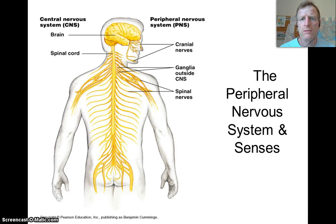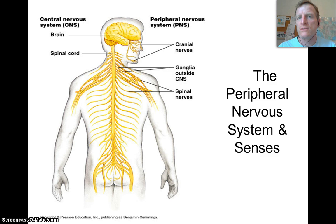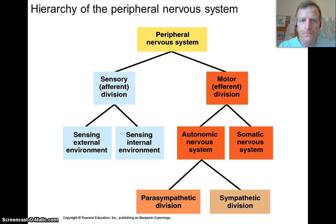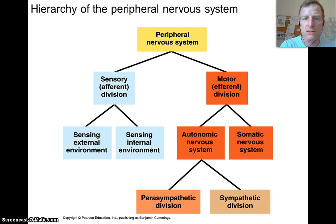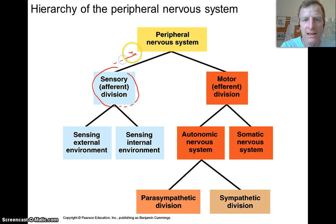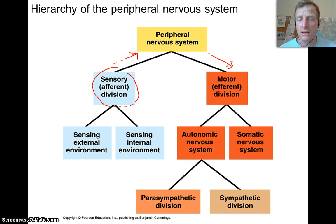The peripheral nervous system consists of the motor neurons that are sending signals out and the sensory neurons that are receiving stimuli and sending that into your brain. We're going to look at the hierarchy or the organization of the peripheral nervous system. The first major division is sensory input, which is going to be sending information in and receiving stimuli, and then the motor or efferent division which is going to be responding and sending signals to your muscles or other parts of your body.